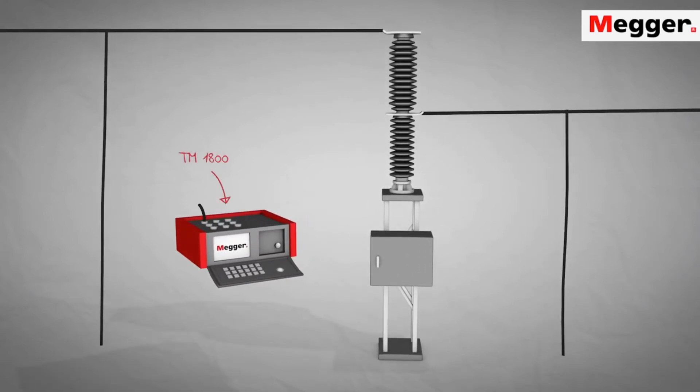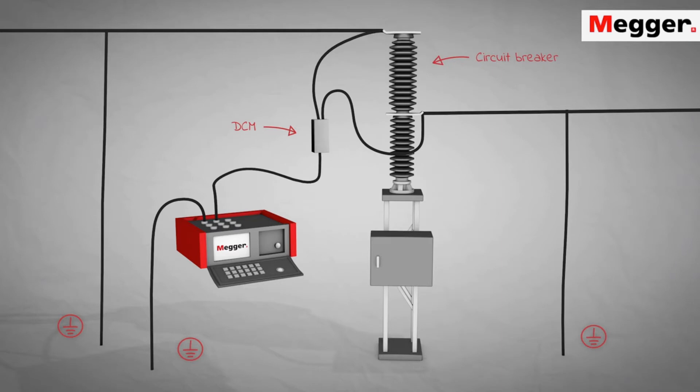Start by connecting the TM1800 to ground. Connect the DCM cables to the circuit breaker. Connect the control cables to the circuit breaker strip and close coil circuits.